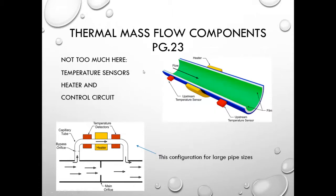Thermal mass components are short and simple: you have a heater, a couple of temperature sensors, and a control circuit. There are different configurations — externally mounted temperature sensors and an external mounted heater versus the insertion style. A third configuration addresses large pipe sizes, similar to ultrasonic flow or turbine meters, using a smaller diameter bypass loop off the side of the large pipe, with an obstruction to encourage flow through the bypass for measurement.